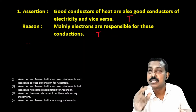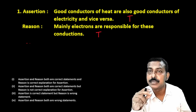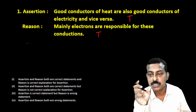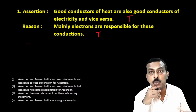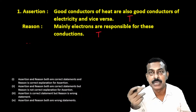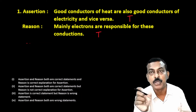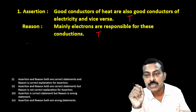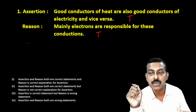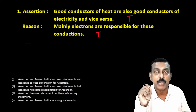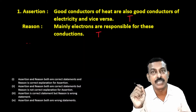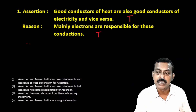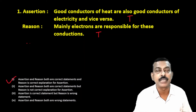Now assertion and reason both are correct. To decide between option one and option two, let's read them together: good conductors of heat are also good conductors of electricity and vice versa, because mainly electrons are responsible for these conductions. So obviously the reason is correctly explaining the assertion, and the first option is the correct one.